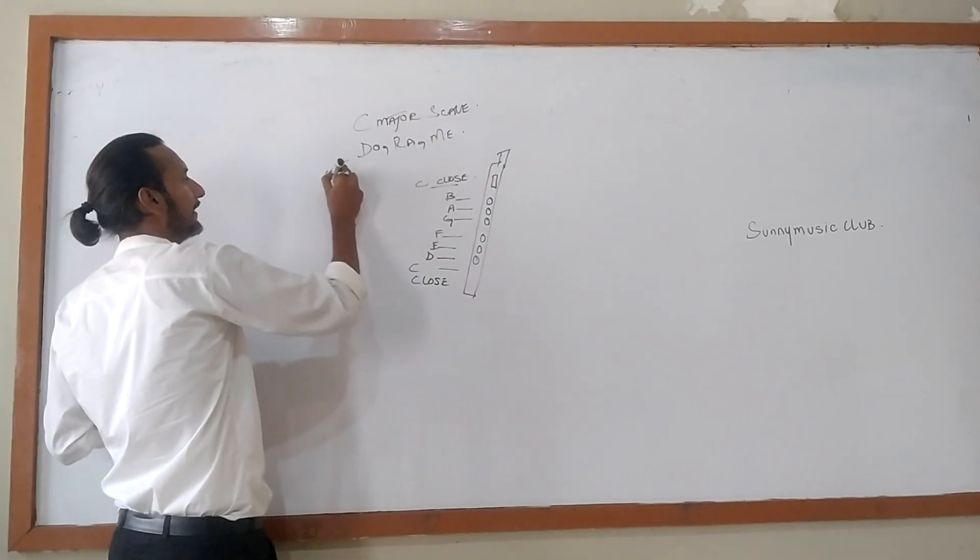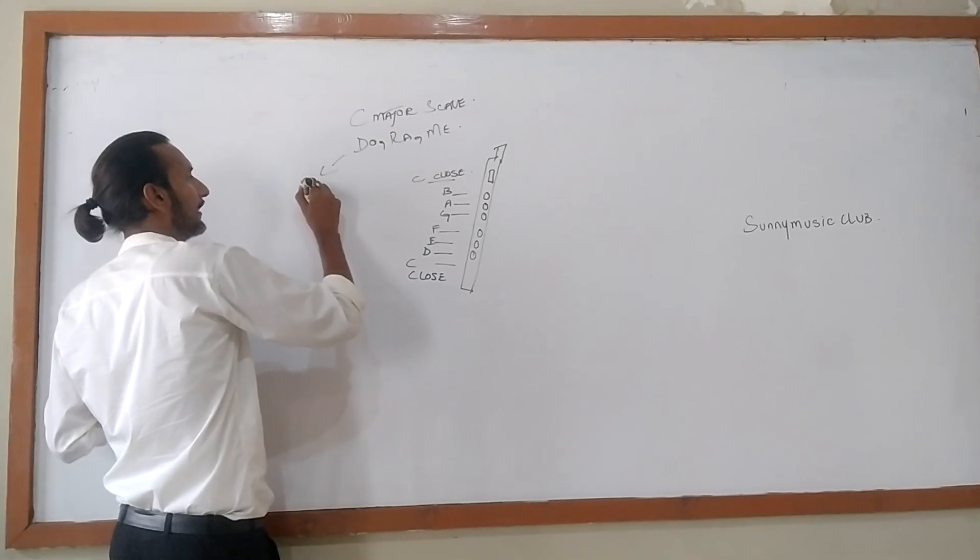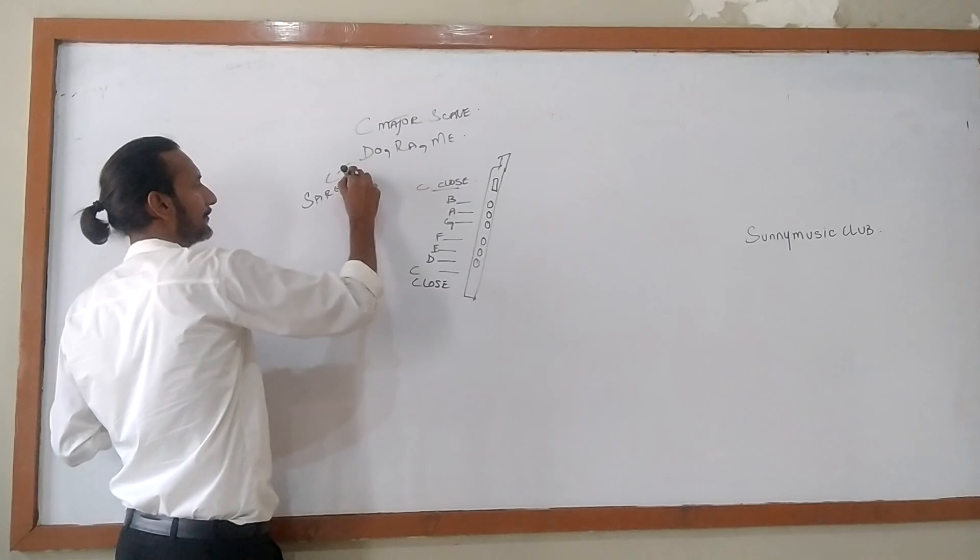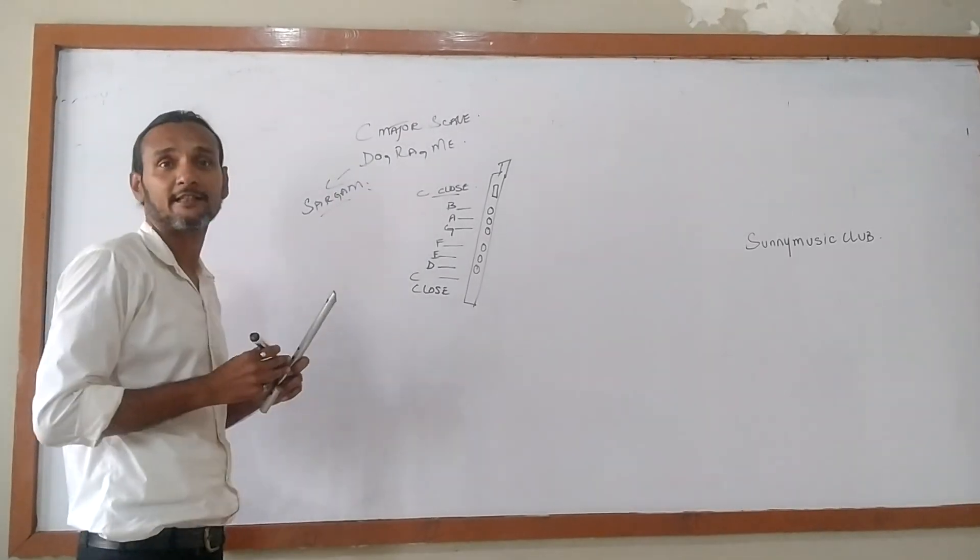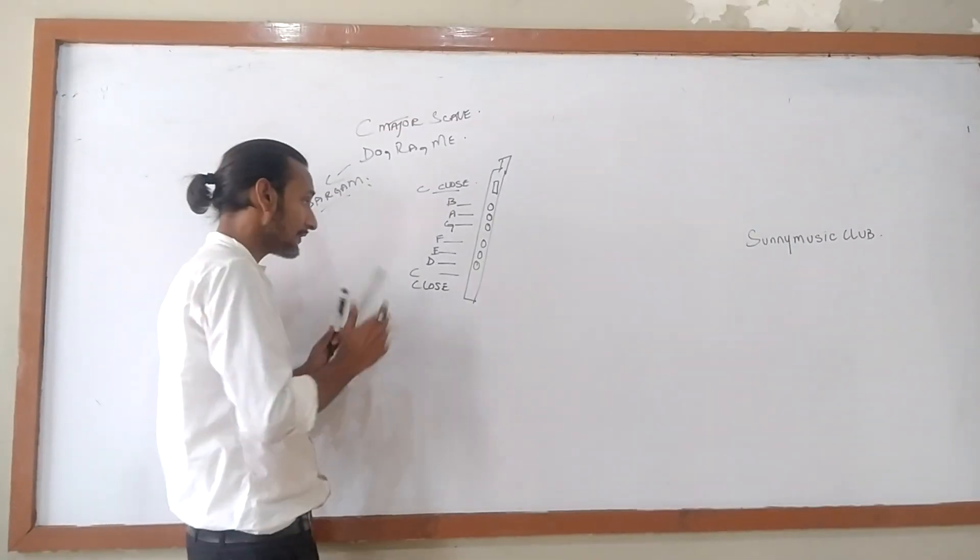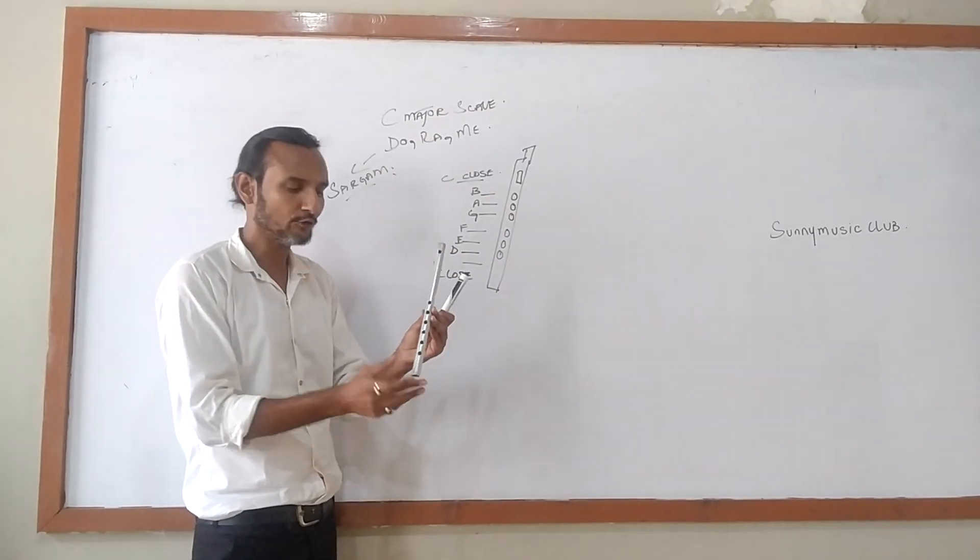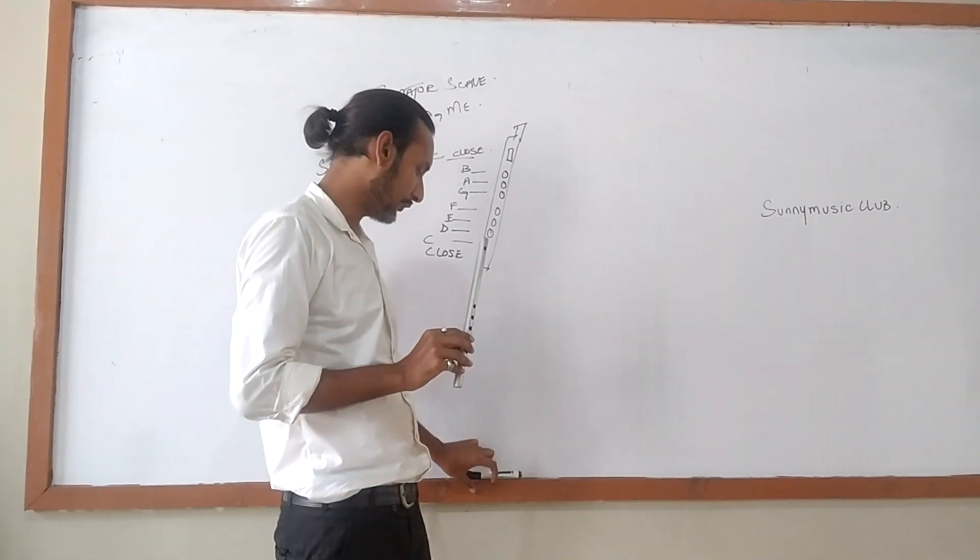C major scale stands for, C major stands for, Do Re Mi Fa. Like, Do Re Mi Fa. And Kudu we know, in history classical we call this Sarga. Sarga means Sarga Ma. How women can understand this.